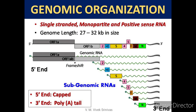Genomic organization: The genome is single-stranded, monopartite, and positive-sense RNA. The genome length is 27 to 32 kilobase pairs. The five-prime end is capped and the three-prime end is polyadenylated (poly-A tailed).